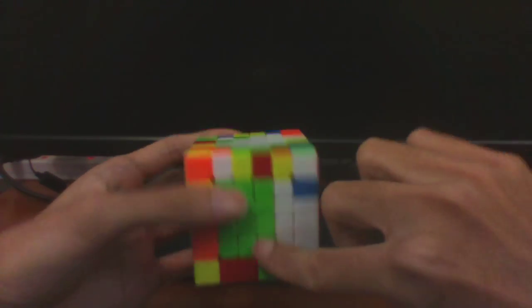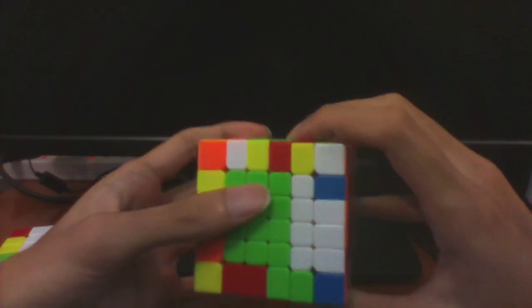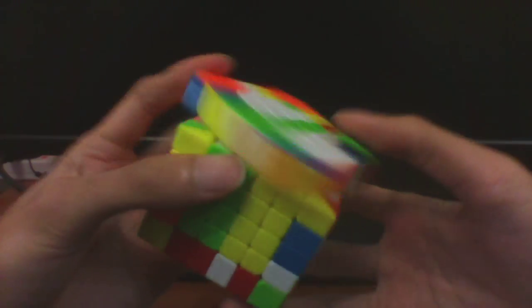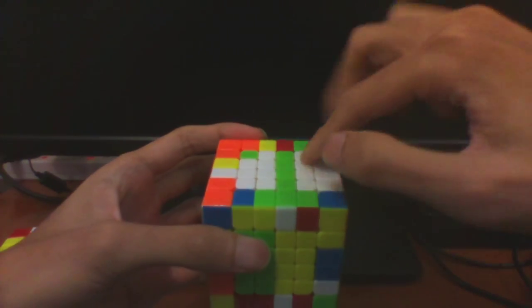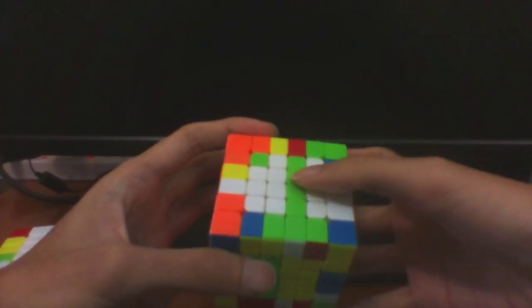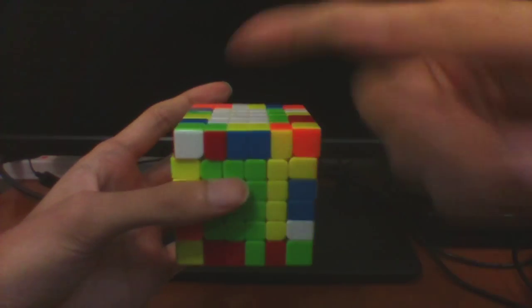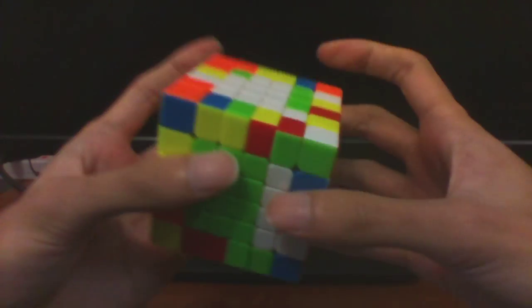Instead of using these 4 pieces, it's this one and this 3. Then when we bring these 2 slices down, we have the 3 pieces over here. Then we just solve the last bar like we do on the 5x5x5.